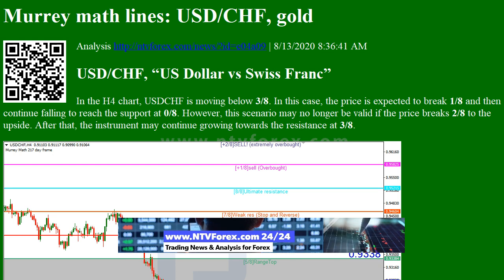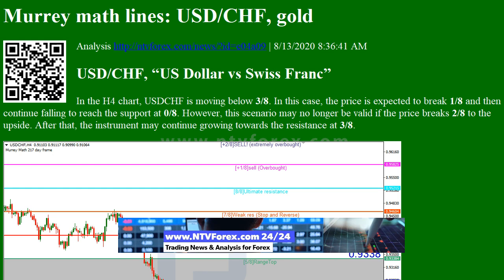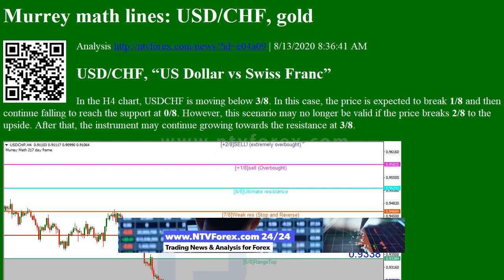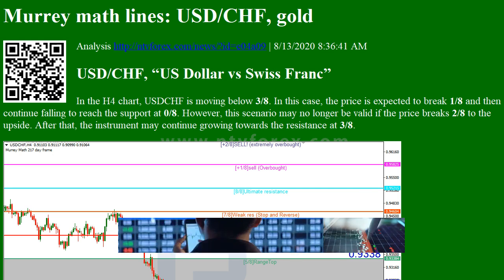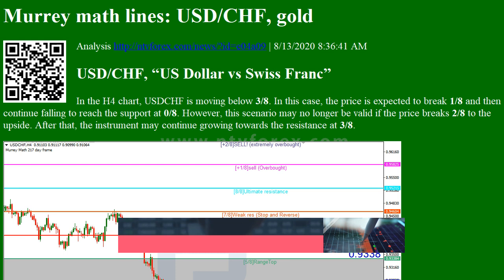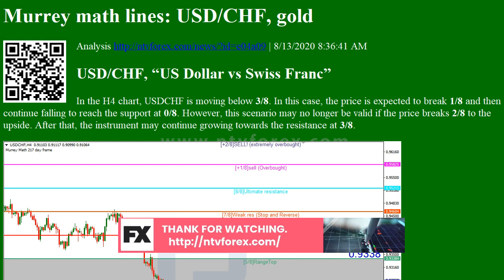USDCHF — US Dollar vs Swiss Franc — in the H4 chart. USDCHF is moving below 3.8. In this case, the price is expected to break 1.8 and then continue falling to reach the support at 0.8. However, this scenario may no longer be valid if the price breaks 2.8 to the upside. After that, the instrument may continue growing towards the resistance at 3.8.